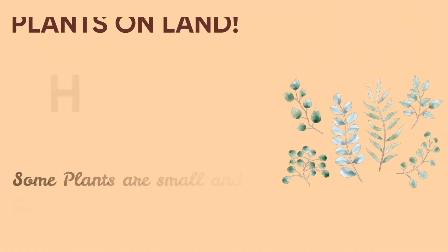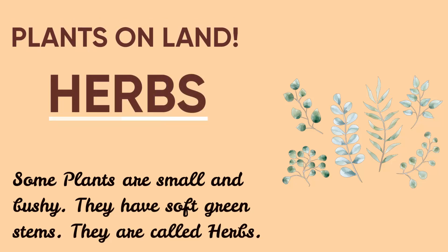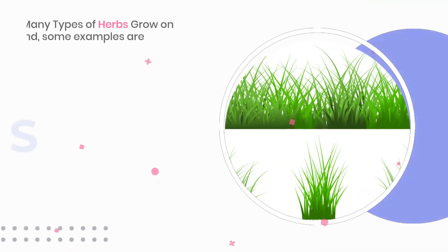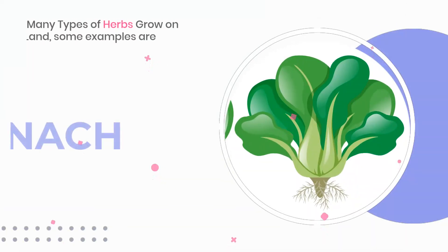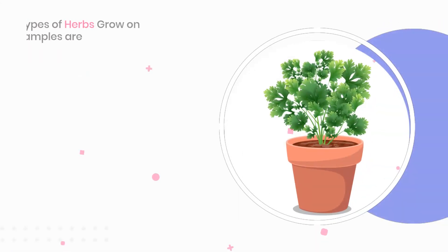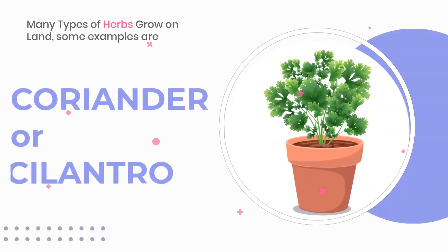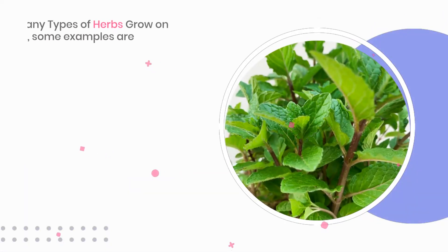Some plants that grow on land are small and have soft green stems. They are called herbs. Some examples are grass, spinach, coriander or cilantro, mint.